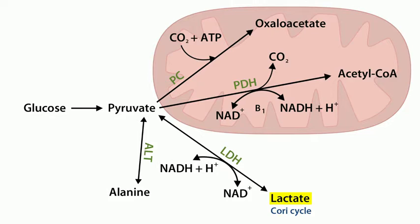Cells that lack mitochondria, like red blood cells, or cells that aren't getting enough oxygen, will put glucose through glycolysis to make pyruvate plus a little ATP, then convert pyruvate into lactate to get rid of it — that goes into the Cori cycle. Finally, the fourth fate is that pyruvate can be converted to the amino acid alanine. We'll talk about both of those cycles at the end of this video.